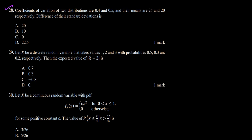Question number 28 says: coefficient of variation of two distributions are 0.4 and 0.5. First of all we need to know what coefficient of variation is. Basically, coefficient of variation is the ratio of standard deviation to mean. This is the coefficient of variation of a distribution — the ratio of its standard deviation and mean.